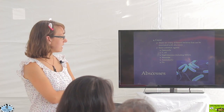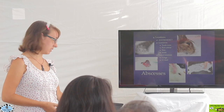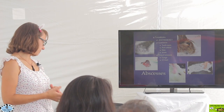There's a list of different organisms that we see on a more frequent basis. Of course Pasteurella is up there, but E. cuniculi, Staphylococcus — including MRSA, the methicillin-resistant Staph aureus — Moraxella, Acinetobacter, and tons of other bacteria can really be in those abscesses causing problems.